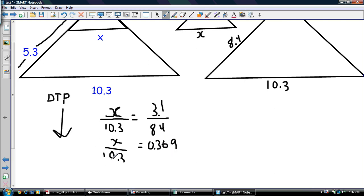And now we're going to do the cross multiplication here. We're going to multiply these two things together. So we got X is equal to 10.3 times 0.369, which is writing.